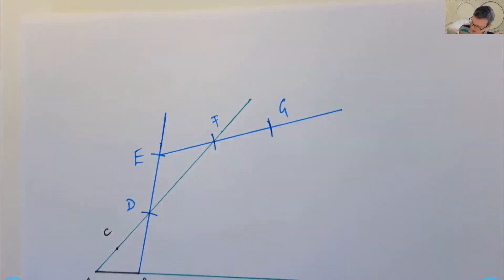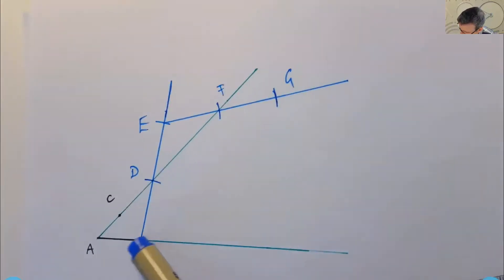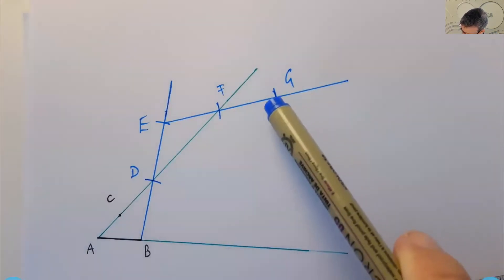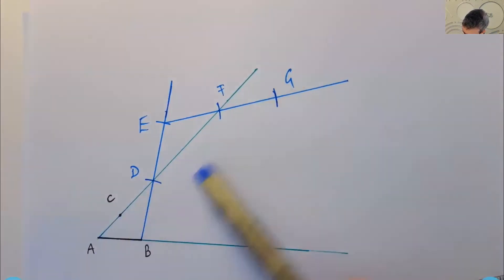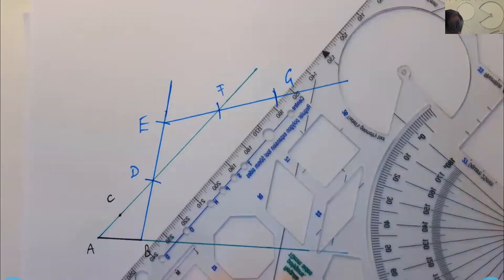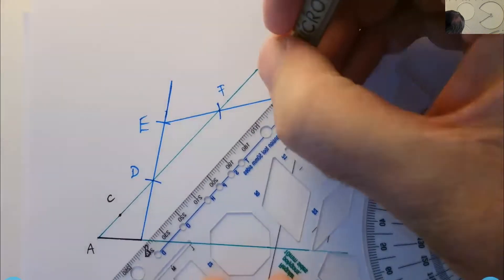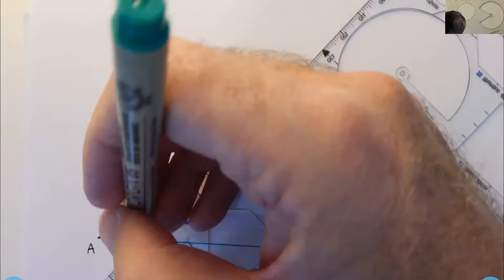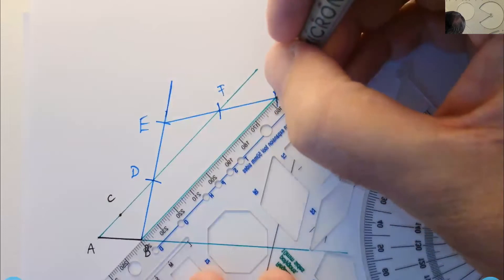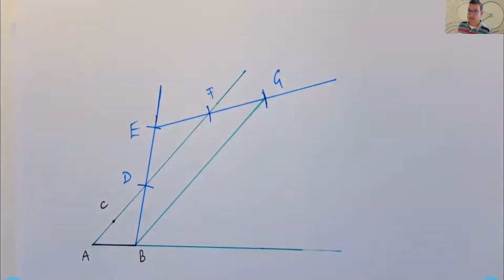Now, I'm going to join B with G. And that's going to give me a line that is parallel to AC. Okay. So let me do that in green because that's going to be the third side, if you like, of our parallelogram. Okay. So you can see here, the two green lines are parallel.